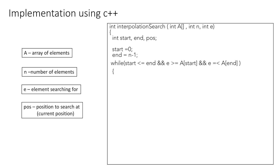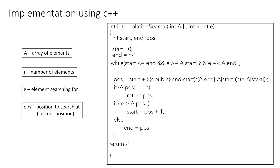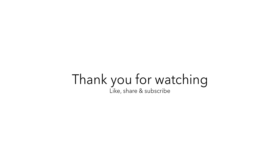Using the formula, we calculate our current position, typecasting the division part to double to avoid getting 0. If the element at the current position equals the element we are looking for, we return its index. Otherwise, if the element is greater than the element at the current position, we make start equal to current position plus 1; else we make end equal to current position minus 1. If the loop ends and the element is not found, we return -1. That was all for this video, thank you for watching.